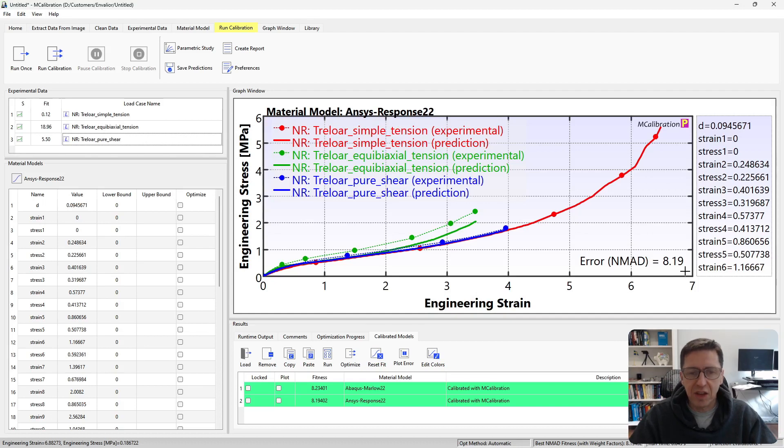Again, the error is pretty much exactly the same, because as you may have figured out, the Marlow hyperelasticity in Abacus is pretty much the same as the ANSYS response function hyperelasticity. But we do have a somewhat big error in the biaxial prediction, as we can see here. And that's common when you have a material model, hyperelastic model that ignores the second invariant in the energy function.